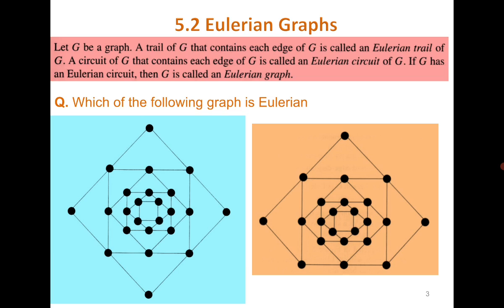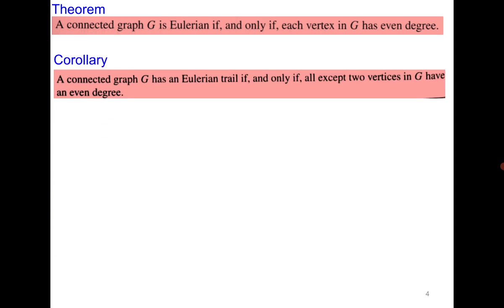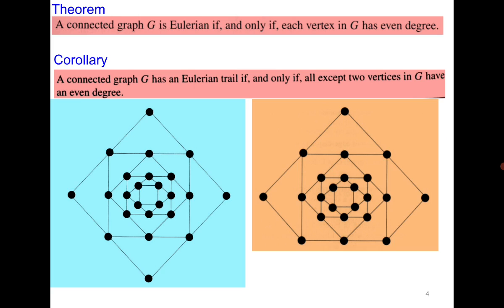As the size of the graph increases, we need some mathematical method to identify if the graph is Eulerian or not. Euler gave this theorem which says that a connected graph is Eulerian if and only if every vertex has even degree. A very interesting and important result. Now you can see that the first graph is Eulerian because each vertex has even degree. All the vertices, whichever you pick, have an even degree and therefore the graph is Eulerian.